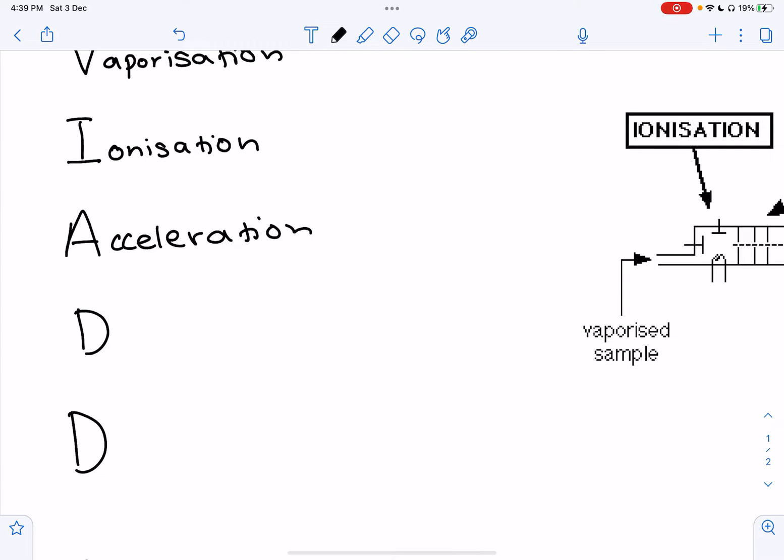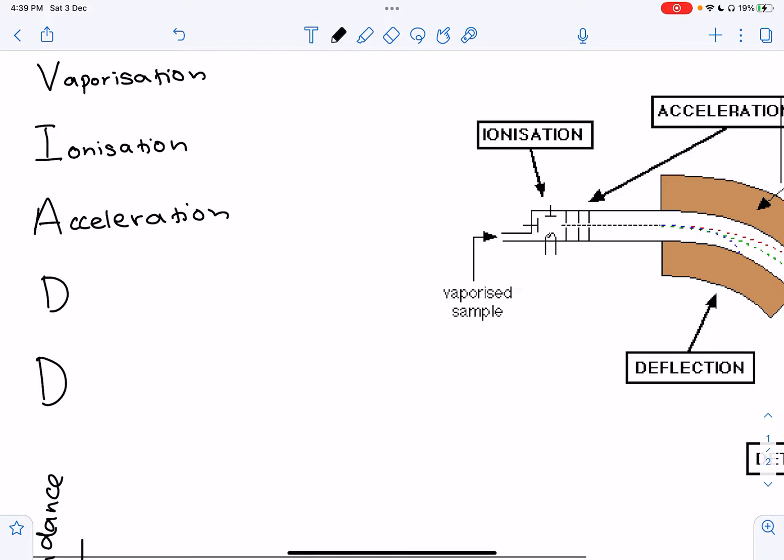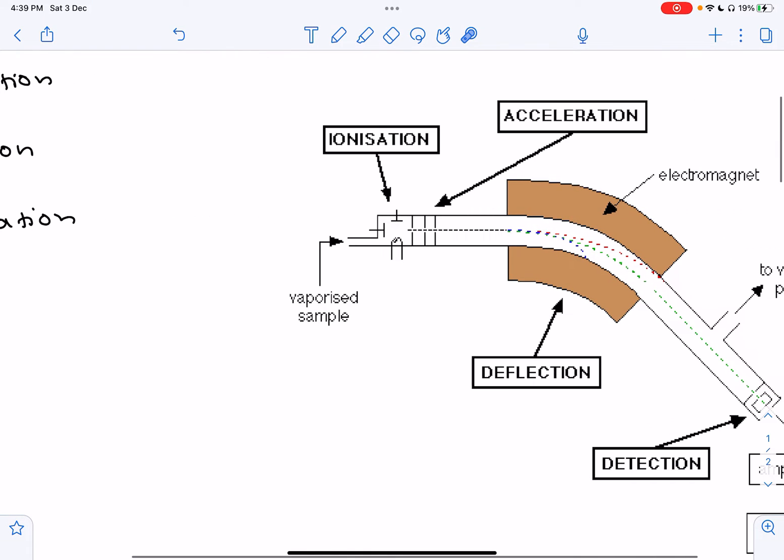The positively charged ionization chamber repels the positively charged ions, which accelerate towards the negatively charged plates. The speed at which they accelerate depends on their mass. The lighter ions move faster than the heavier molecules. This happens in the ionization chamber, and this is where they will then accelerate.